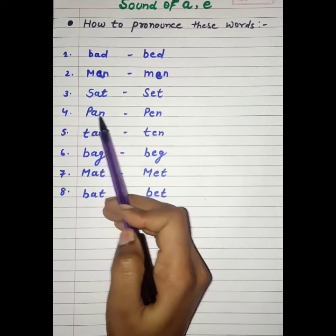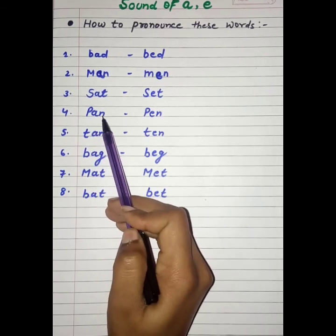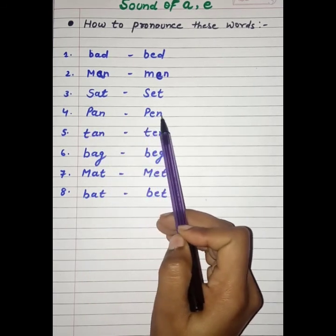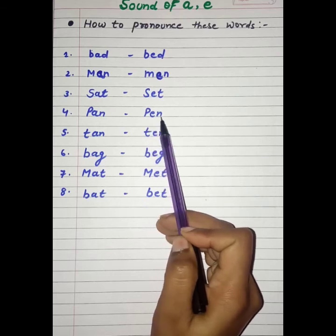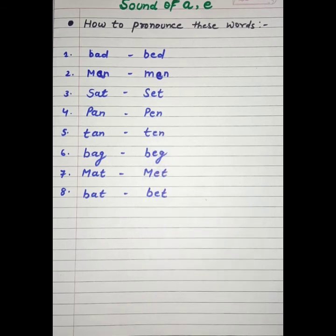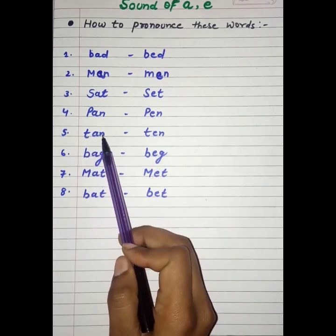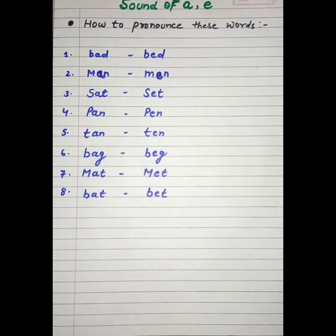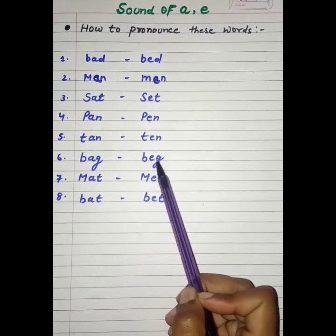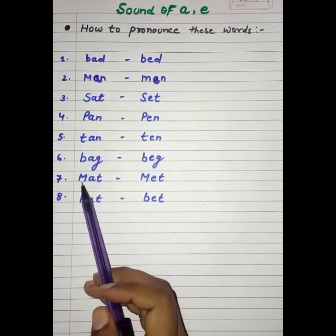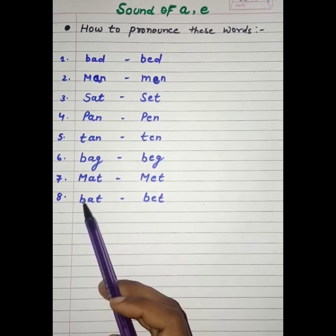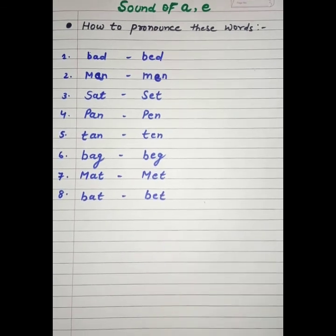Now fourth one is P, A, N — pan. And P, E, N — the E, N sound is 'en' — pen. P, A, N — pan. P, E, N — pen. Fifth one: T, A, N — tan. T, E, N — ten. Sixth one: B, A, G — bag. B, E, G — beg. Seventh: M, A, T — mat. M, E, T — met. And B, A, T — bat. B, E, T — bet.